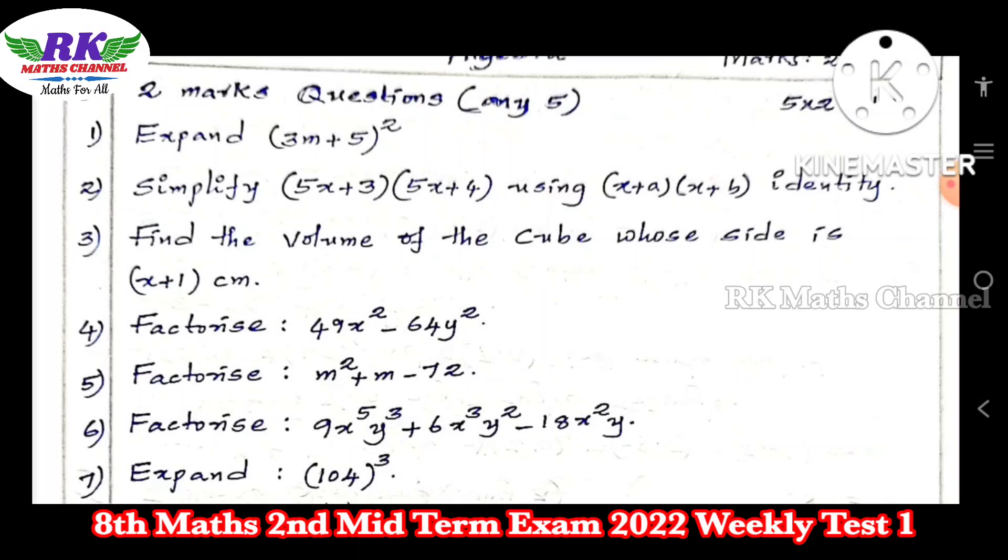Next, factorization. Factorize 49x² - 64y². Here, a² - b² equals (a + b)(a - b). That formula will be used.